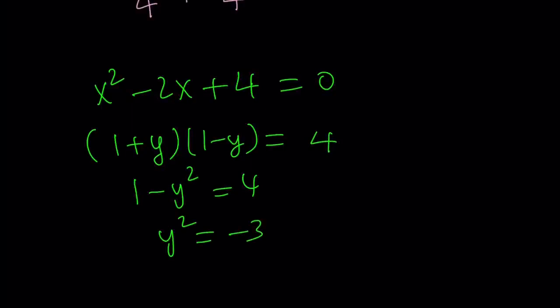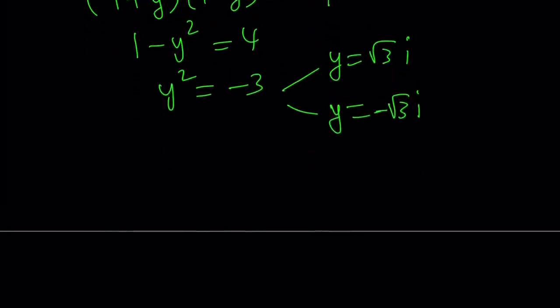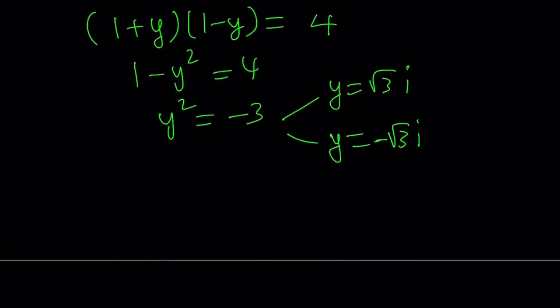This gives us 1 minus y squared equals 4. That means y squared is negative 3. That's not good. It is good. Don't worry about it. For me, y is going to be square root of 3i and its opposite, because when you square, you're going to get negative 3 again. i is our imaginary unit. Now I have 1 plus root 3i and 1 minus root 3i, and solutions are not real.